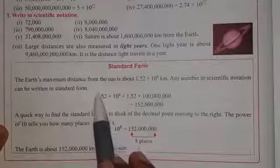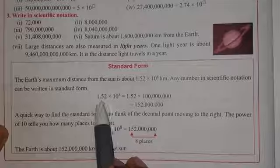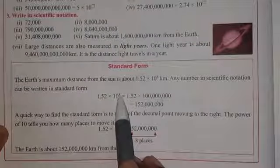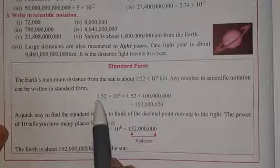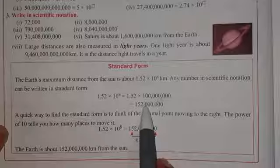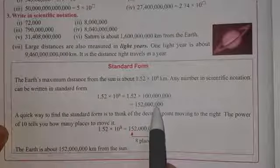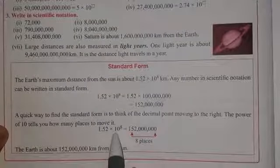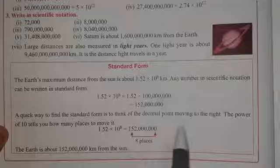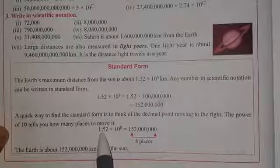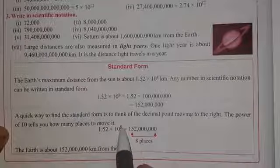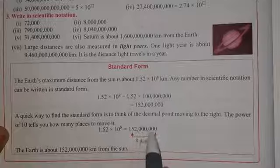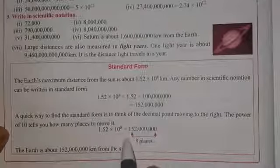The short method is: look at how many decimal places are in the first factor. Here 1.52 has two decimal places. So we subtract 2 from the power 8, leaving us with power 6. That means we write 152 and then add six zeros after it, so the number in standard form becomes 152,000,000. This is how you convert back to standard form.